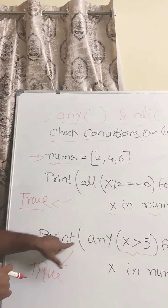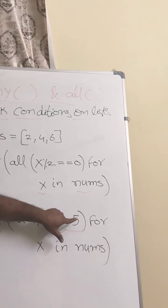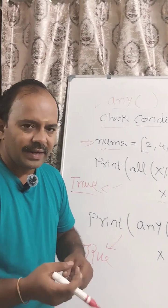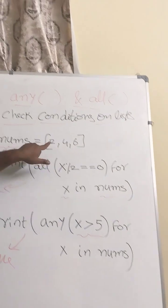Now here we are going to say print any x greater than 5 for x in nums. As usual, take every element from the list nums and verify this condition x greater than 5. First, is 2 greater than 5?